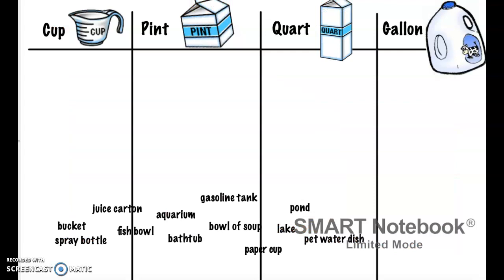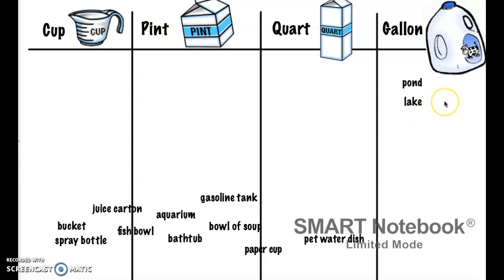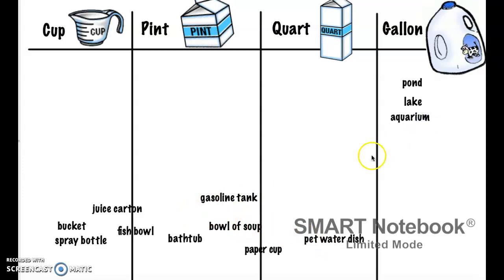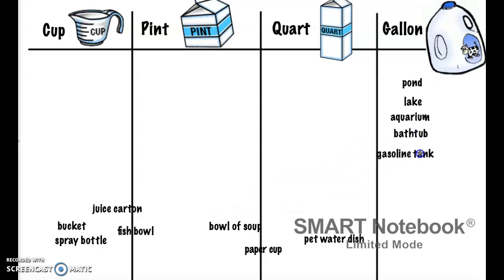Here we're going to be putting these where they go. Let's start with gallon on the right-hand side. Definitely a pond, definitely a lake — those are pretty big areas of water. An aquarium — aquariums are large and have to hold quite a bit of water. A bathtub — you don't want to be freezing cold so you want it to cover the majority of you. And a gasoline tank — when I fill up mine, it definitely takes many, many gallons.